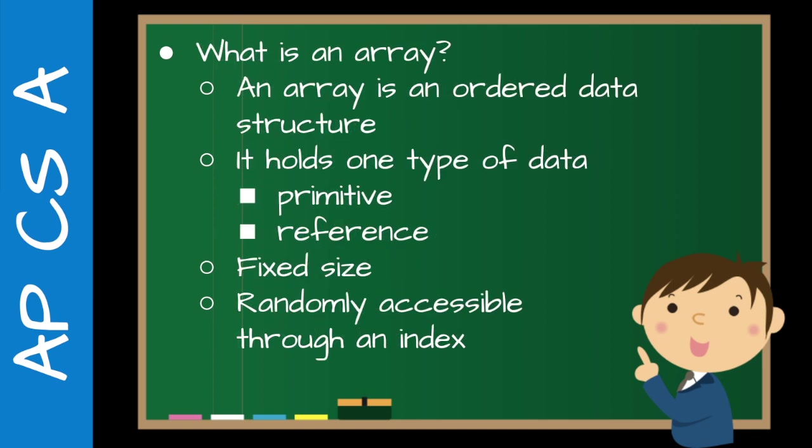So what is an array? An array is an ordered data structure — the key here is ordered. Arrays in Java hold one type of data; they can be primitive types or reference types, meaning objects. If you're coming from Python, for example, lists are kind of similar to arrays, but you can put an integer, a string, you can mix types. Java is a little bit stricter about that sort of thing.